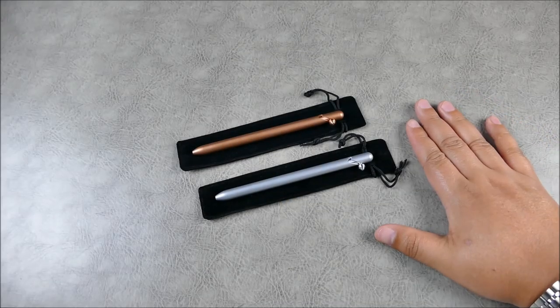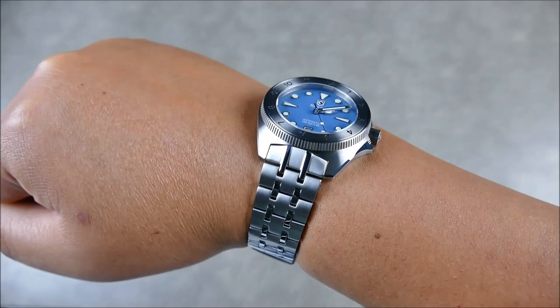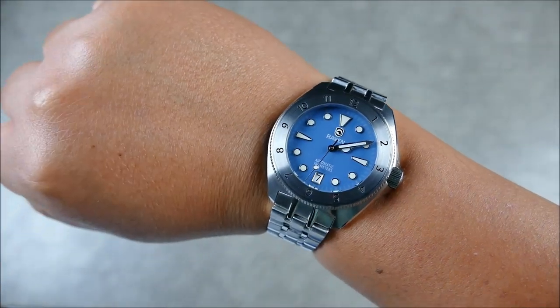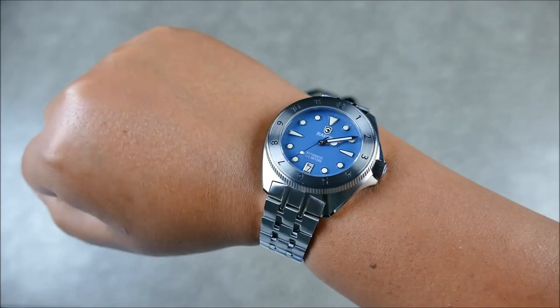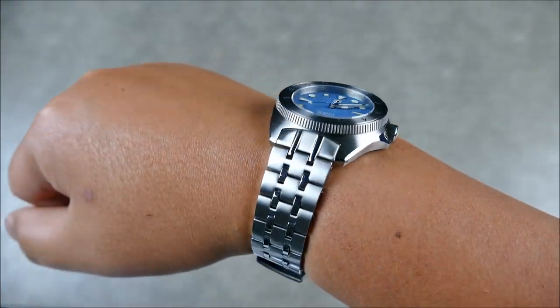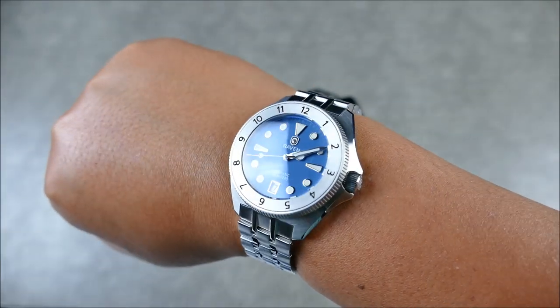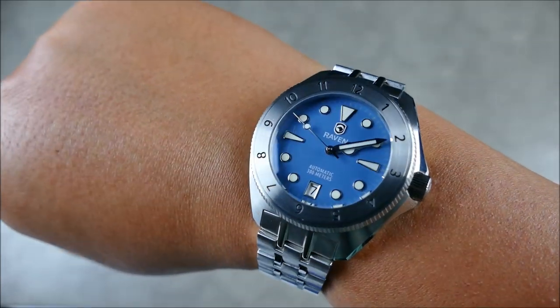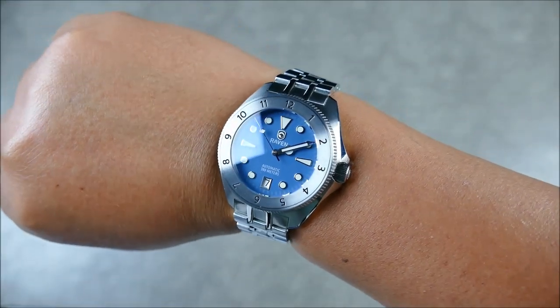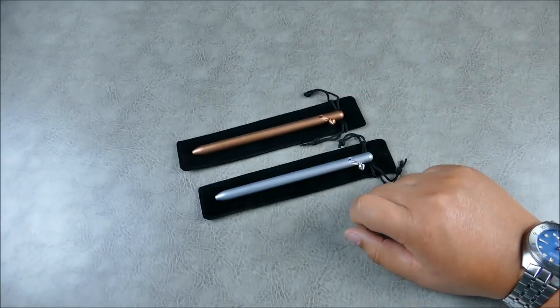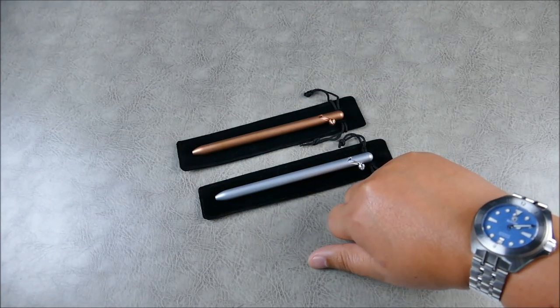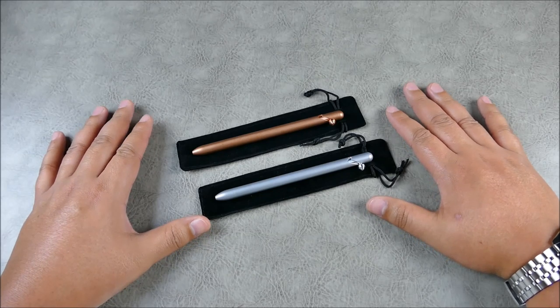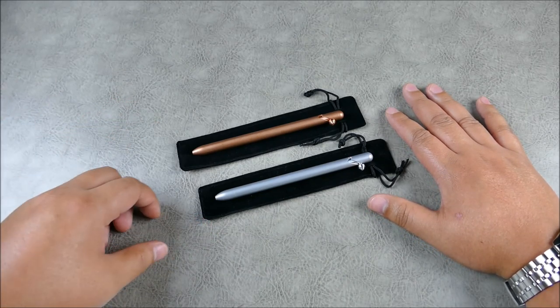Before we get these in hand, quick wristwatch check for you. This is the Raven Solitude. I just wrapped up doing a series on Raven watches, and they also make pocket knives under the Finch brand. This has a really cool 12-hour travel bezel so if you need to track multiple time zones easily, you can just scoot your bezel over. Check the channel for the full review.